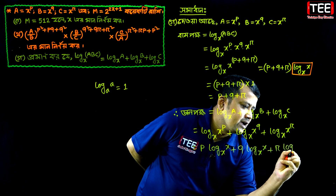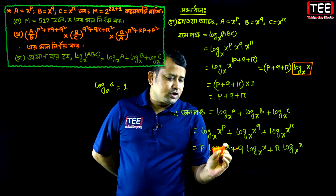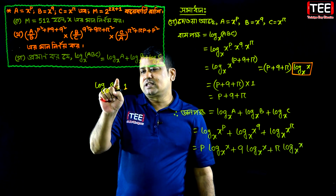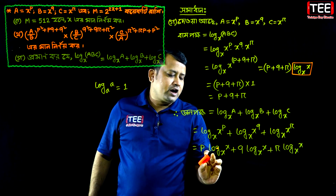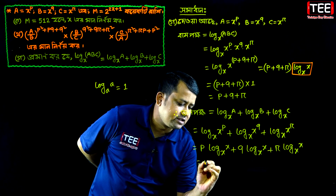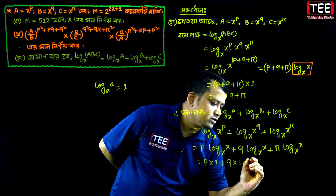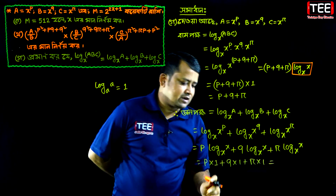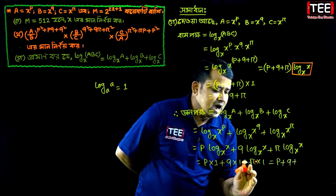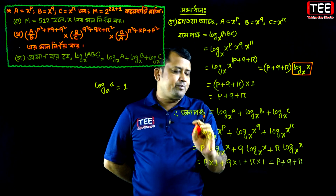Log x base x equals log x base x. That's why it's equal to 1. Log a base a is the same as log x base x, that's why it's equal to 1. So p into 1, x base x; q into 1, x base x; r into 1, x base x plus R. Therefore P, Q plus R, then P plus Q plus R.